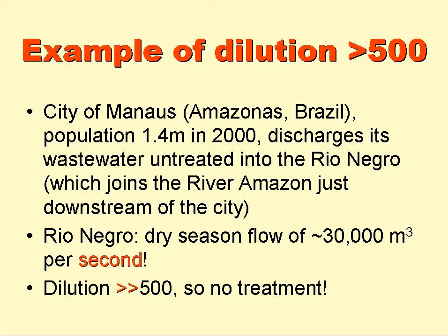A good example of dilution much greater than 500 is at the city of Manaus, the capital of Amazonas state in Brazil. The city had a population of about 1.4 million in 2000, and all its wastewater is discharged without treatment — just coarse screening — into the Rio Negro, which joins the Amazon River just downstream of the city. The Rio Negro has a dry season flow of about 30,000 cubic metres per second, so the dilution is vastly greater than 500, and no treatment is necessary.